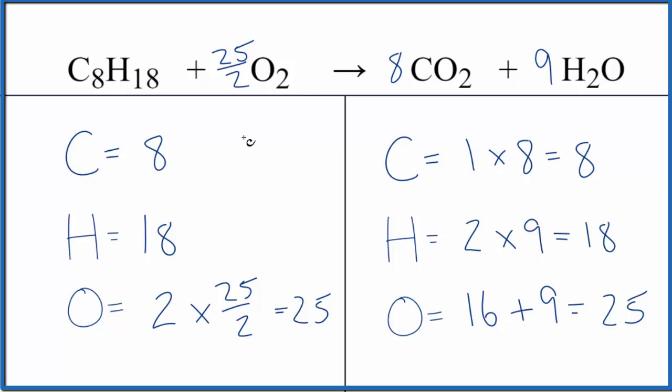When we're balancing equations like combustion reactions here, what we're really interested in is the coefficients. Those are the ratios of each substance. So some teachers like to have this as a whole number. That's pretty easy to fix. We just multiply everything by 2. So these coefficients, they're correct as well. Again, it's the ratio that we're really interested in.